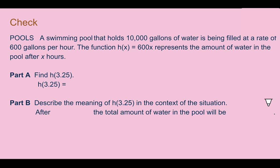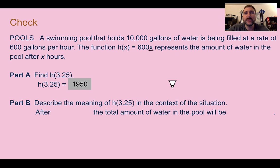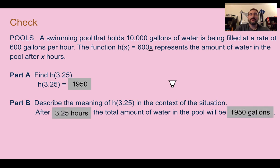Check your understanding: find h of 3.25 and explain what it means in context. Plugging in 3.25 gives 1950. In context, after 3.25 hours the amount of water in the pool will be 1950 gallons.